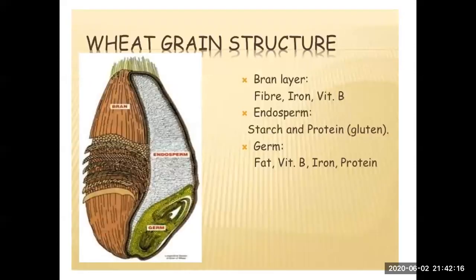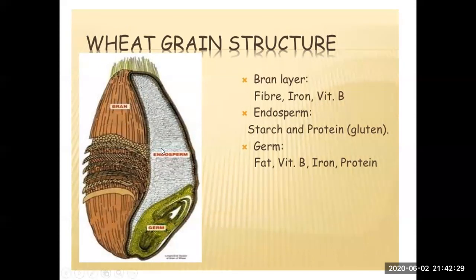The third part is the wheat germ, which is rich in oil and contains loads of vitamins. Looking at the wheat grain structure: the outer portion is the bran layer, which contains fiber, iron, and vitamin D. The middle portion is the endosperm, which contains starch and protein, that is gluten. The inner portion is the germ, which contains fat, vitamin B, iron, and protein.